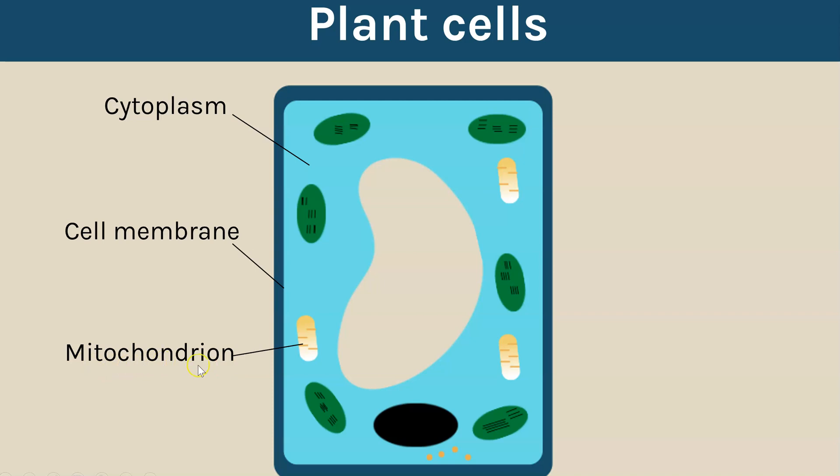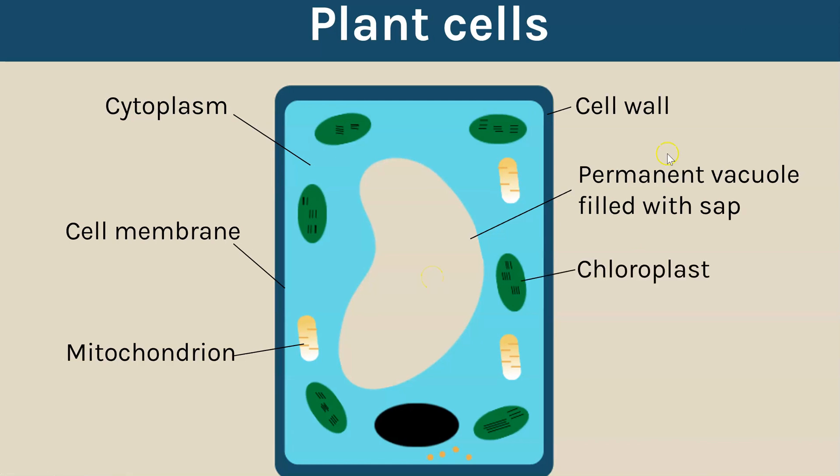Notice here I've called it mitochondrion, that's because it's only pointing to one and the singular is mitochondrion, the plural is mitochondria. They have a cell wall, they have a permanent vacuole which is filled with sap, they have chloroplasts, a nucleus which contains the genetic information and ribosomes.